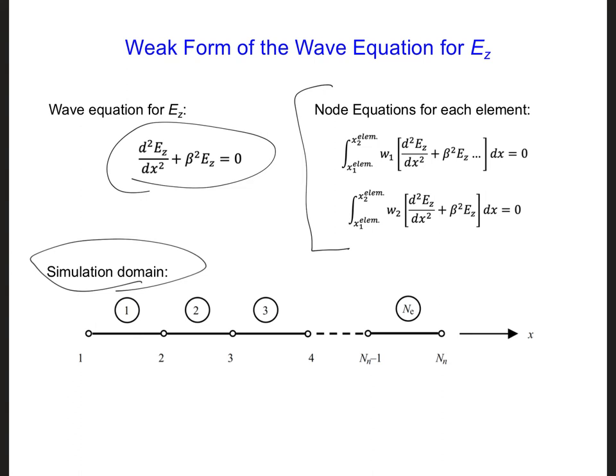So instead of enforcing that this wave equation is equal to 0 across all x positions in space, we are enforcing that this wave equation is equal to 0 in a weighted sense. Meaning that at the first node of each element, we are multiplying by the first weighting function, w1, and we're integrating over the length of the element and setting this whole quantity equal to 0.